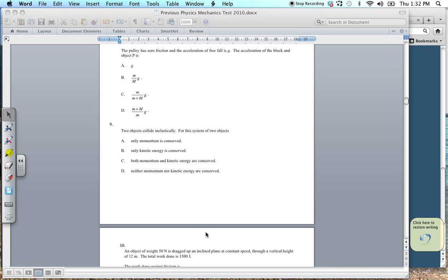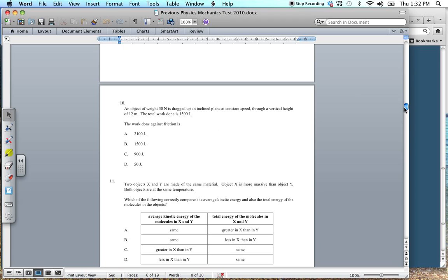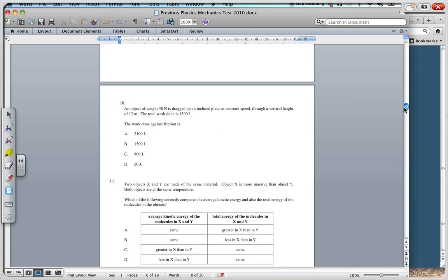And then, I think I'll finish off this section with 10. Let's have a look at 10. So, we have an object of weight 50 N is dragged up an inclined slope plane at a constant speed through a vertical height of 12 meters. The total work done is 1,500 joules. The work done against friction. Alright, well, in dragging this up, you have raised the vertical height by 12 meters. So, your potential energy increase is going to be MGH.